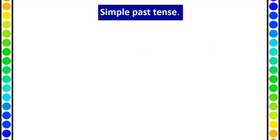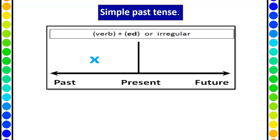Past tense. So what is simple past tense? Bhutkal. So look at the timeline. Anything which we want to talk about — a past incident, past things — we use simple past tense.